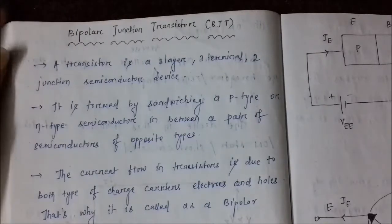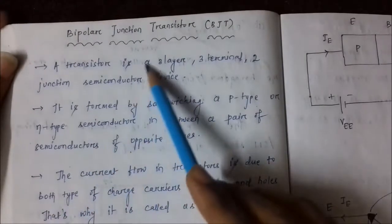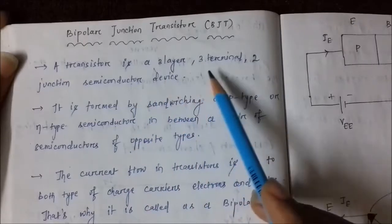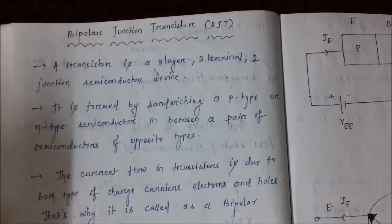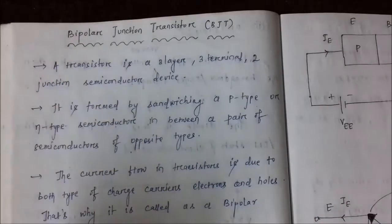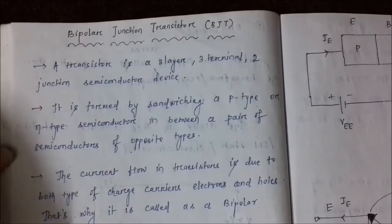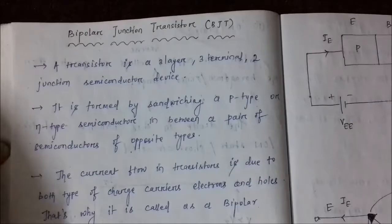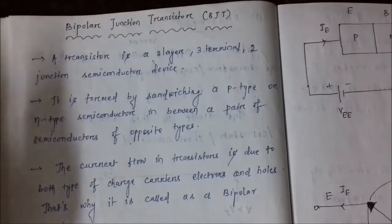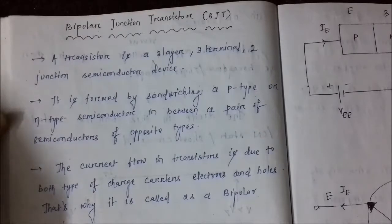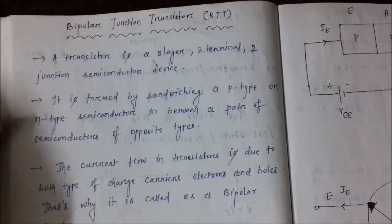A BJT or transistor is a three-layer, three-terminal, and two-junction semiconductor device. So from this we understand that there are three layers involved, three terminals and two junctions or two interfaces, and it is formed by sandwiching a p-type or n-type semiconductor in between a pair of semiconductors of opposite types.